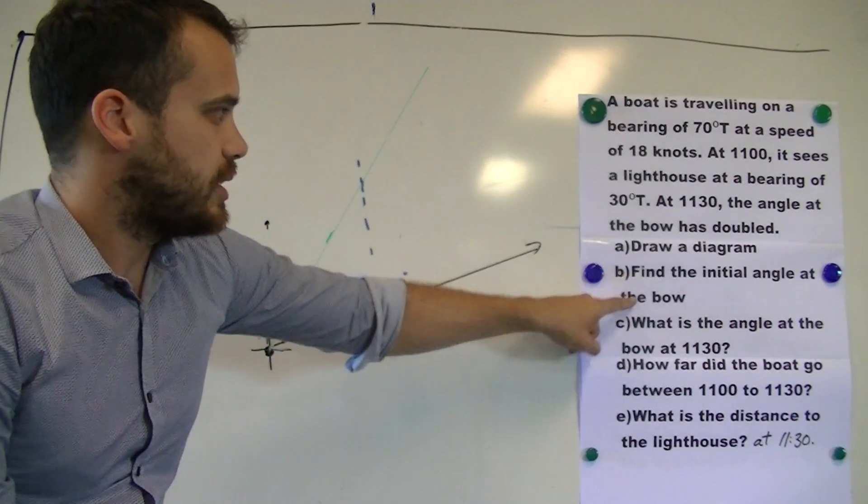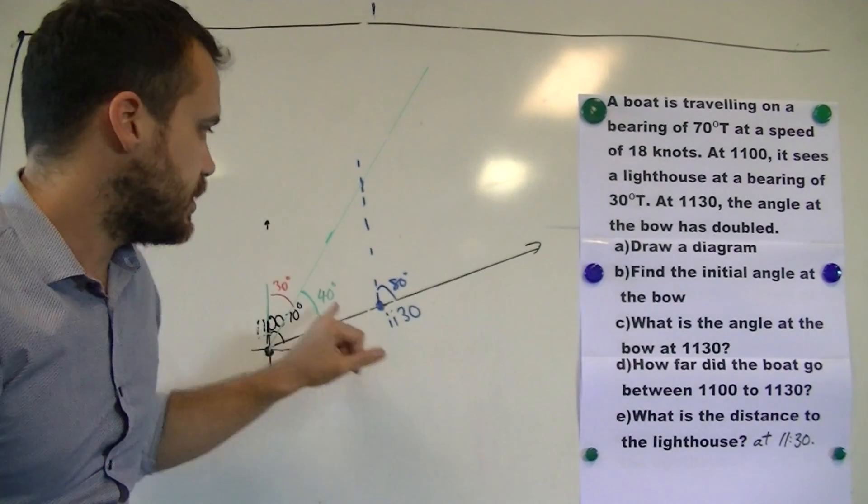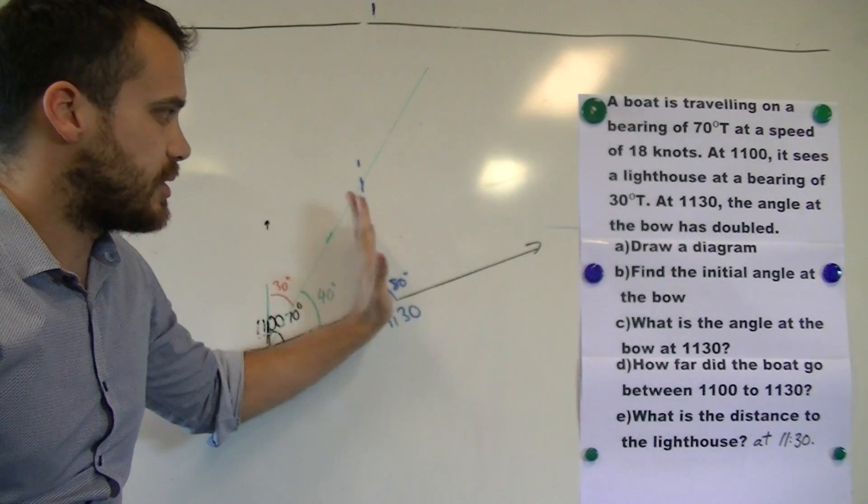Okay, so find the initial angle at the bow, that's 40 degrees. What is the angle at the bow at 11:30? Double of whatever that was, which is 80 degrees.